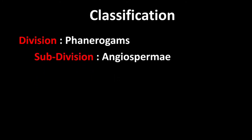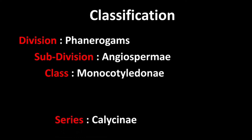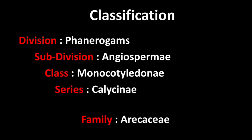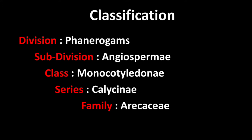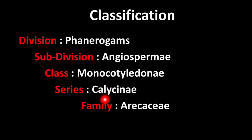Let us start with Bentham and Hooker's classification of the family Arecaceae: division Phanerogams, subdivision Angiospermia, class Monocotyledony, series Calicini, and family Arecaceae. According to this classification system, the class is directly divided into series and series directly into families — there are no subclasses and no orders under Monocotyledons.